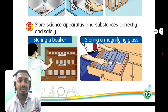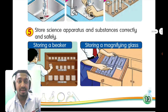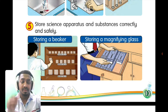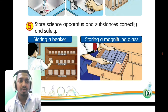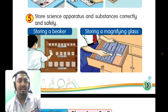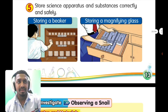Manipulative skill number five: store science apparatus and substances correctly and safely. After drying the test tube, you have to store it in its original place — where you originally took it from, which should be clearly labelled. For example, store a beaker in the right place, and store a magnifying glass by putting it into its box and placing the box in the right location.